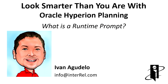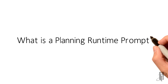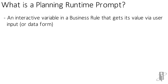A runtime prompt is a type of substitution variable used in business rules to provide flexibility by allowing a user to provide the value for the variable when the business rule is run, as opposed to using a predetermined fixed or hard-coded variable value.